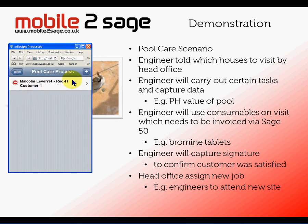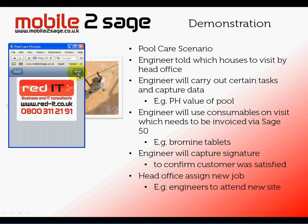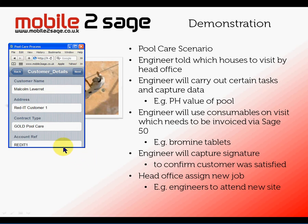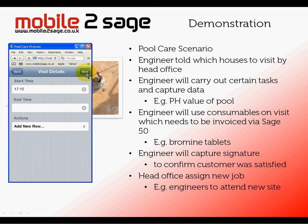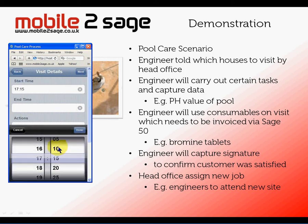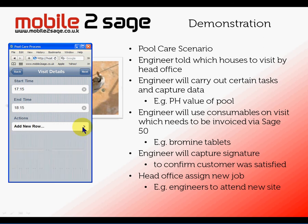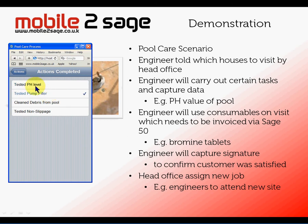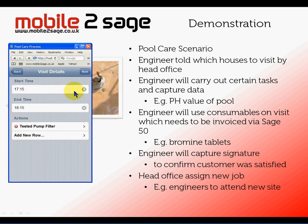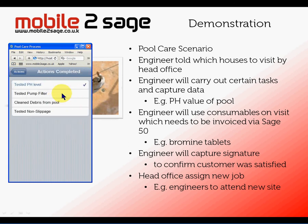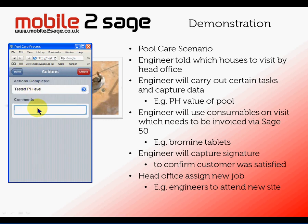He now gets in his car or van and sees that he needs to go and see — that's my company logo — Mr. Mark Everett, who is the customer with a gold pool care contract, so he gets a super service. That's his account detail, Red IT1, in the Sage system. He started at quarter past five and actually finished the job at quarter past six. The first thing he did was check the pump filter and that was okay.